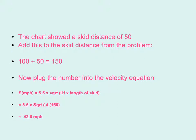And now we have our 50 feet that we saw from our chart. Our original problem said the car left a skid mark of 100, and you can see this on the previous couple of slides. We add the 100 and the 50. So the car, had it not hit the bridge, would have had a skid mark of 150 feet.